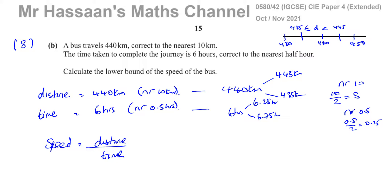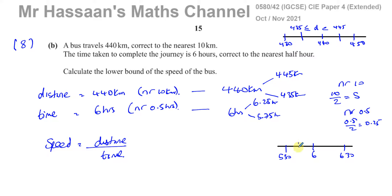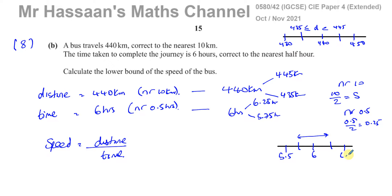Similarly with the time: it's rounded to the nearest half hour to 6 hours, so it could have rounded to 5:30 or 6:30, but it rounded to 6. So it's anywhere between the halfway points, which are 5.75 and 6.25. In terms of hours, this means 5.75 up to 6.25.